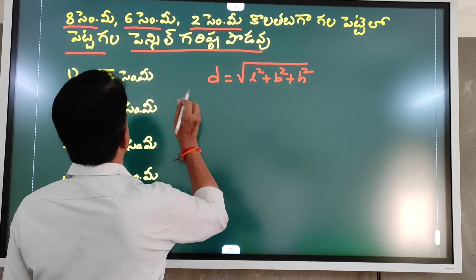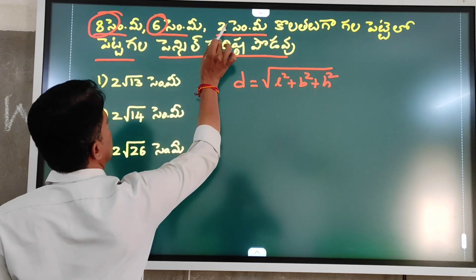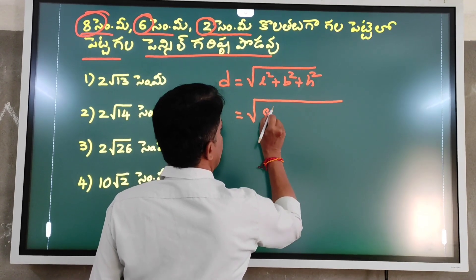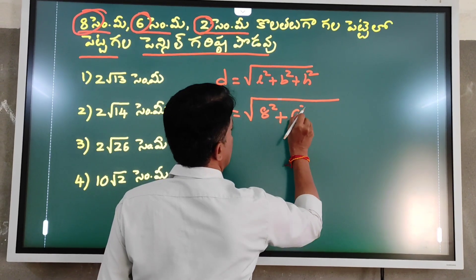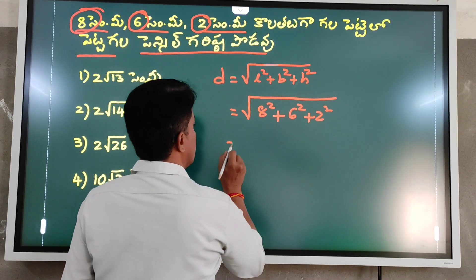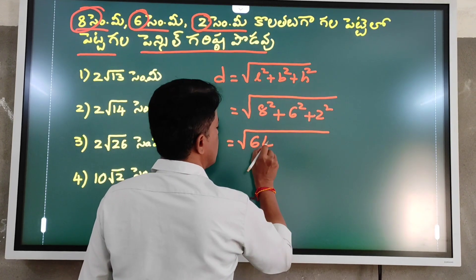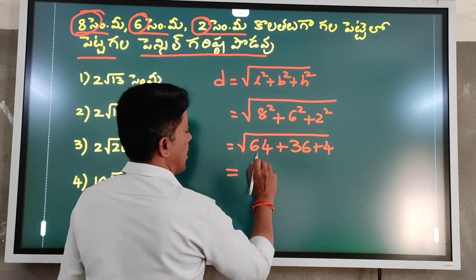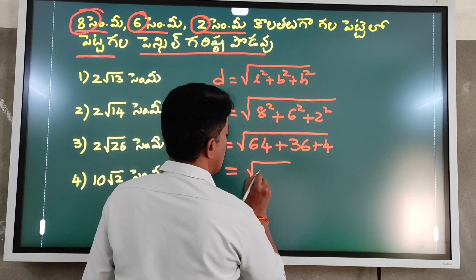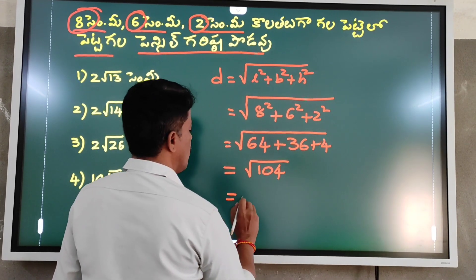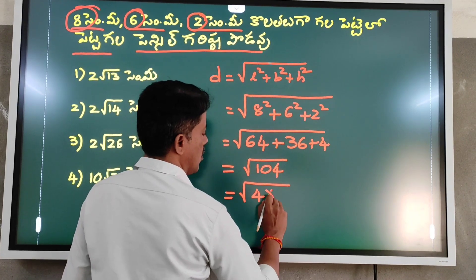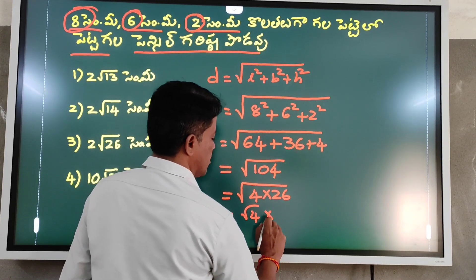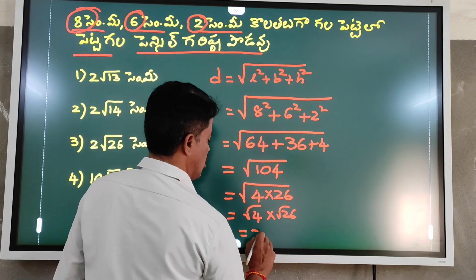So that's the SIR system. If you want to talk about the SIR system, we can talk about SIR system. 2² + 10 = 4. 64 = 1 + 4. 64 = 4. 2 = √4 × √24. 2√26 centimeters.